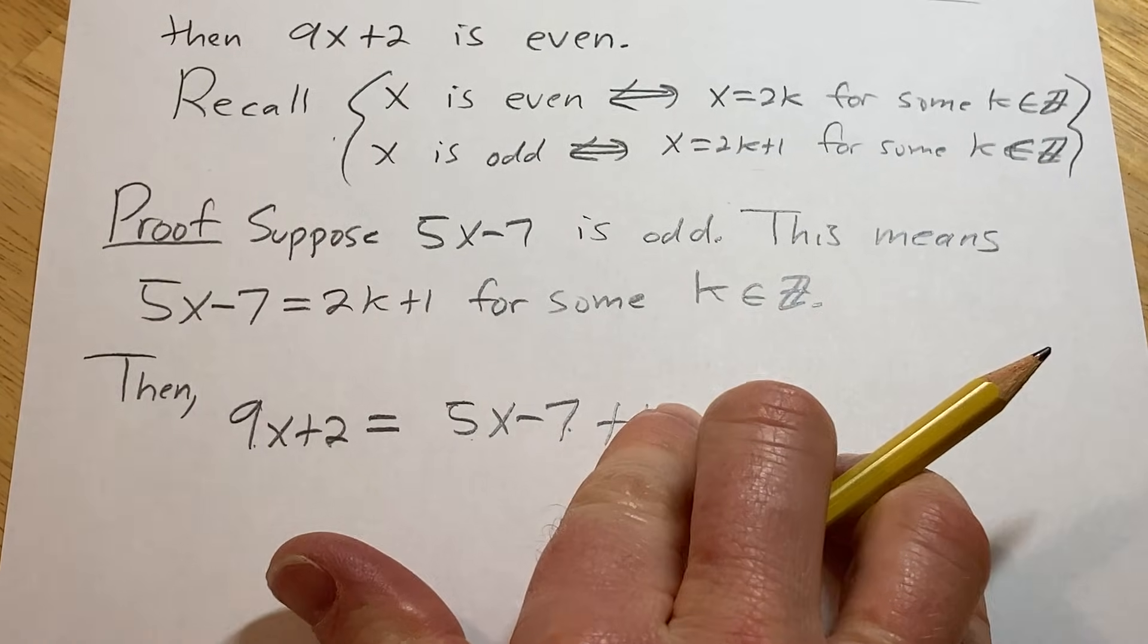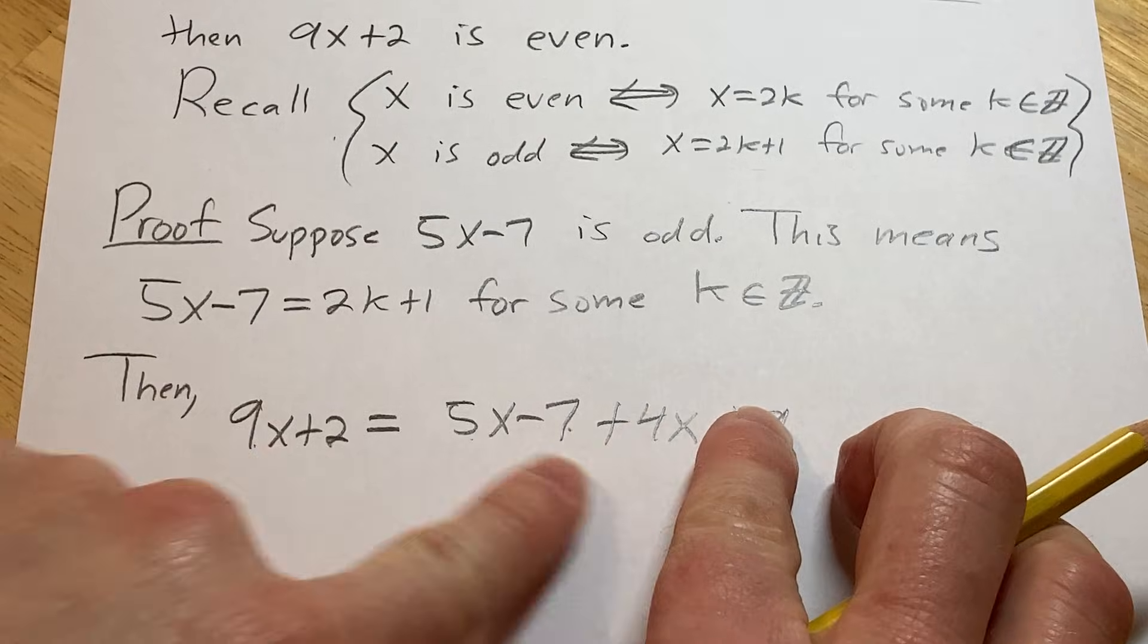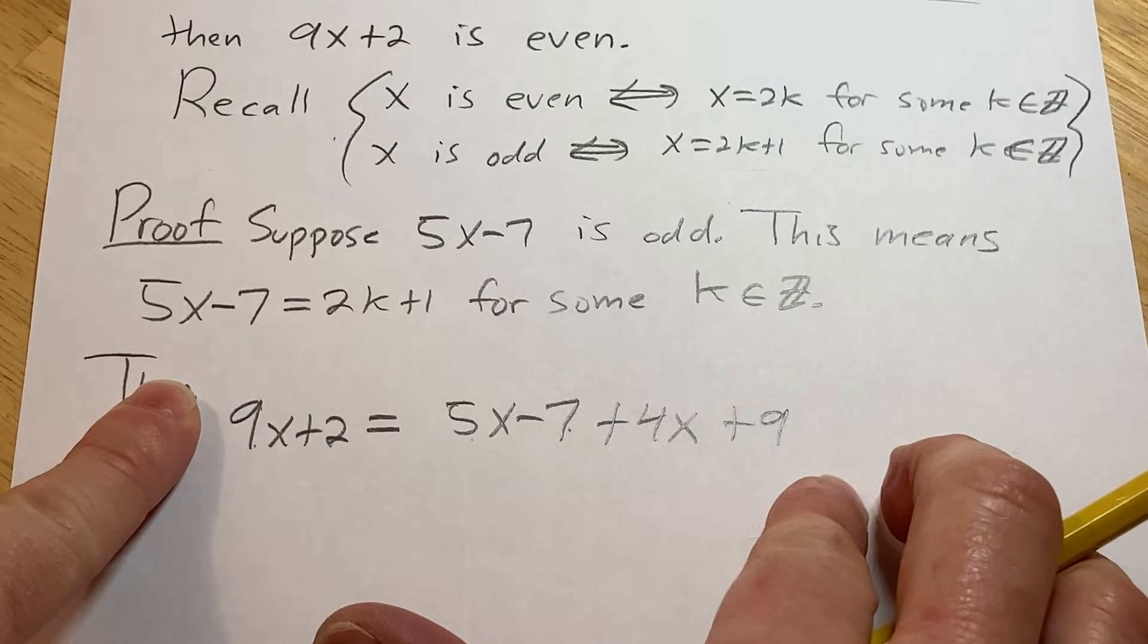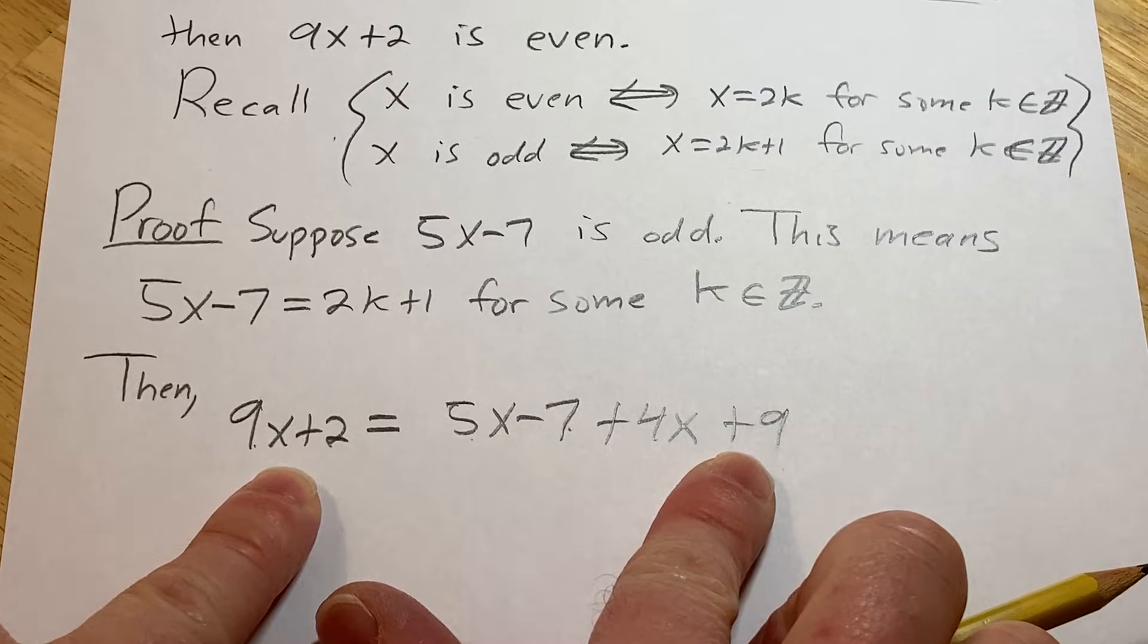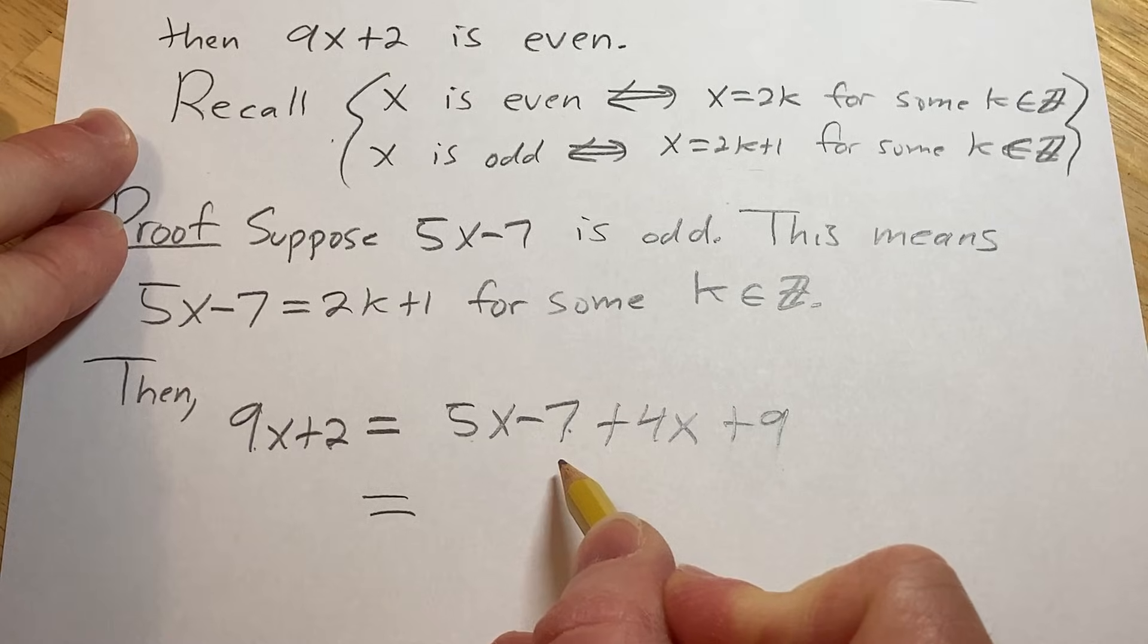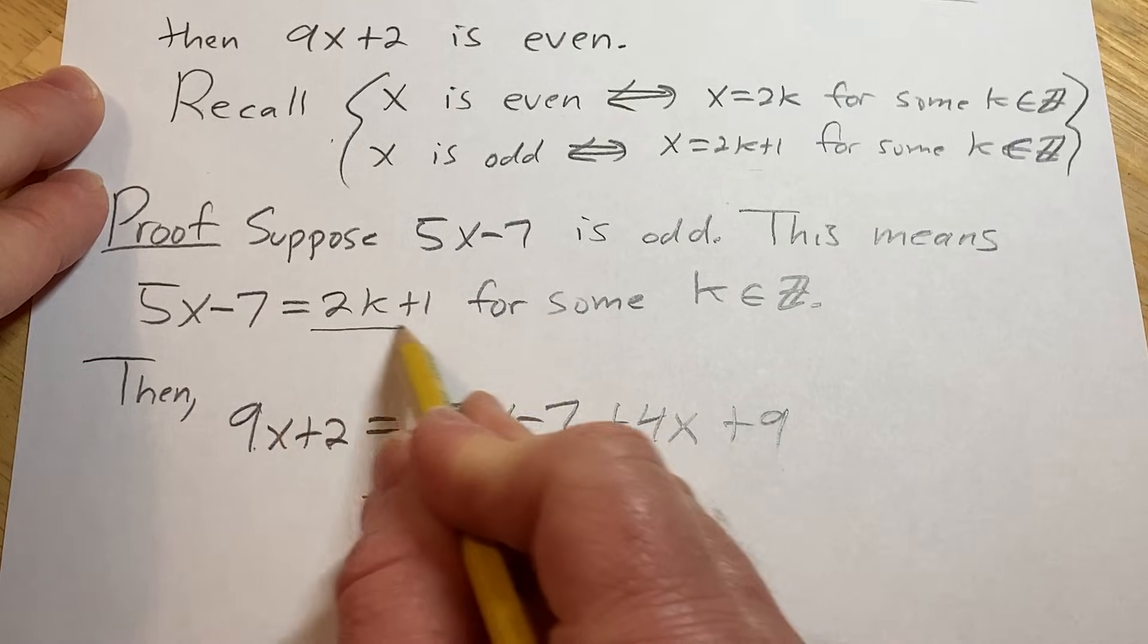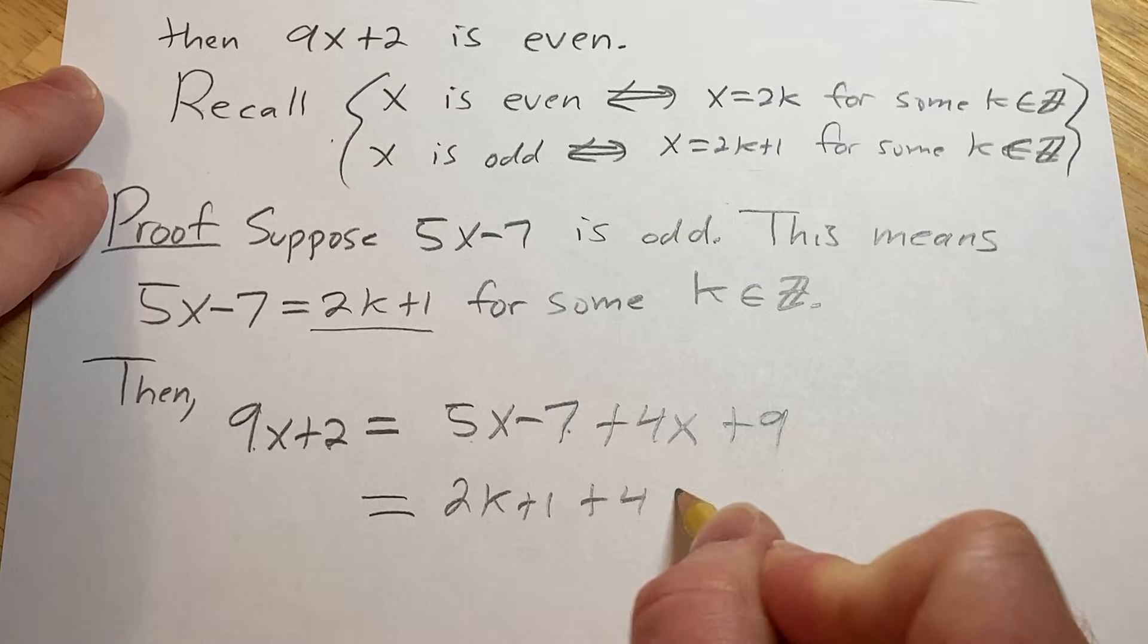So again, I wrote down what I wanted. I say, hey, I want a 9x. I want it to be true. So I'm going to put a 4x here. 4x plus 5x is 9x. Hey, I want this to be a plus 2, but I have a minus 7. So I'll put a 9 here. So now this is equal to 5x minus 7 is simply this, 2k plus 1 plus 4x plus 9.